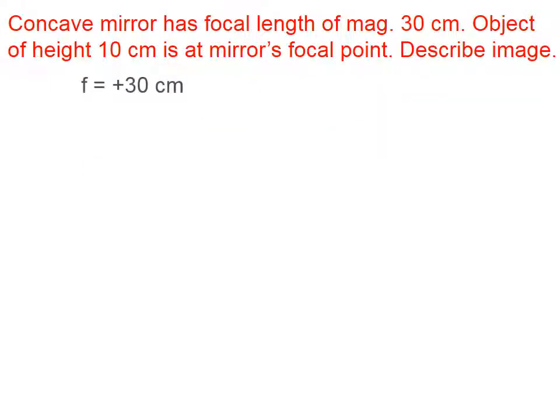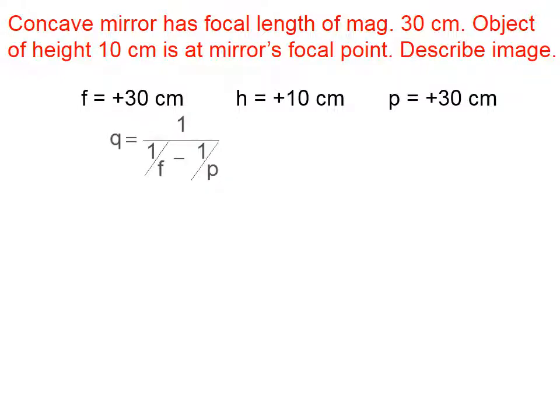Let's do one more. A concave mirror has a focal length of magnitude 30 centimeters, so f is positive 30. The object, which has a height of 10 centimeters, is at the mirror's focal point. Well, that means that p is also equal to 30. Describe the image.